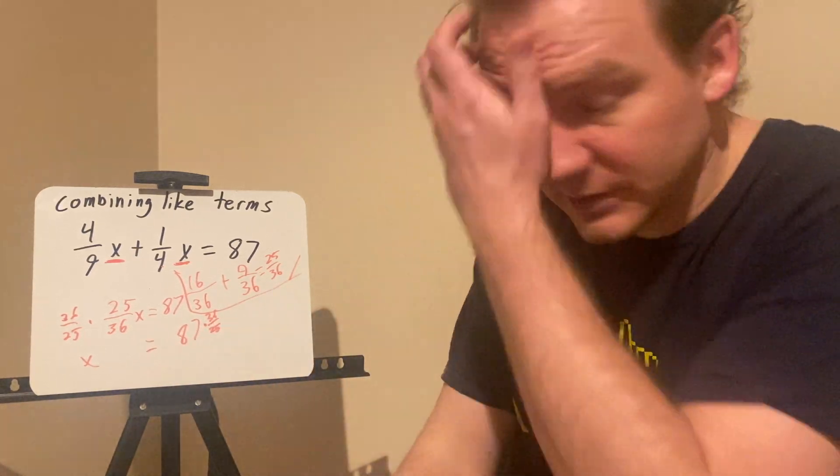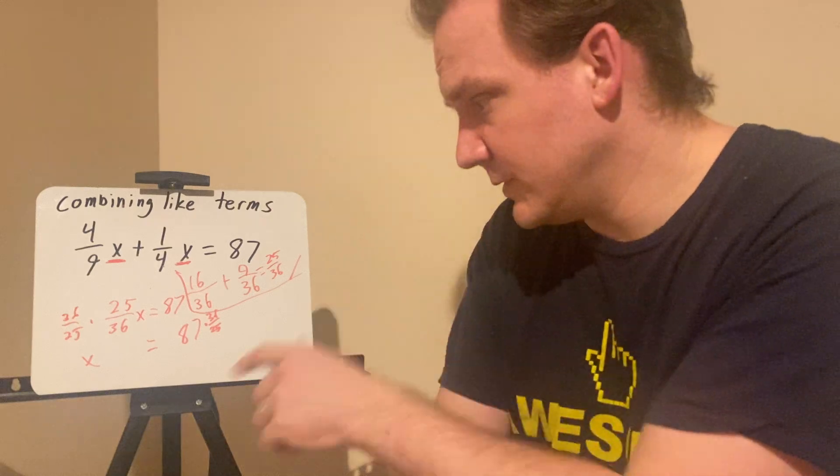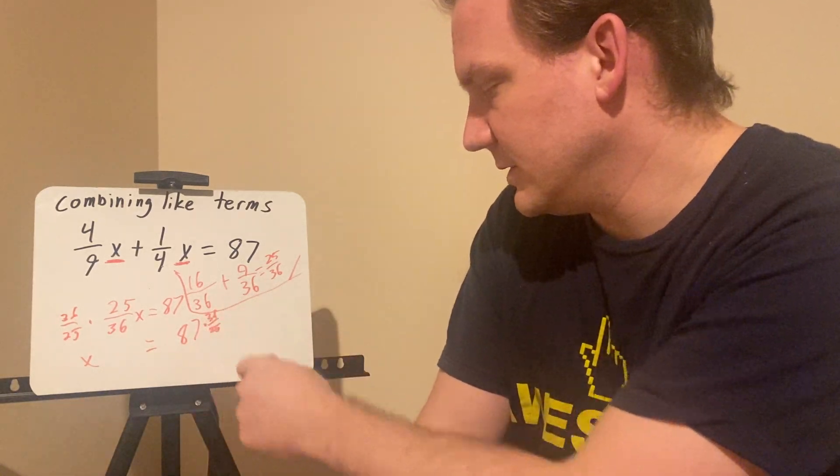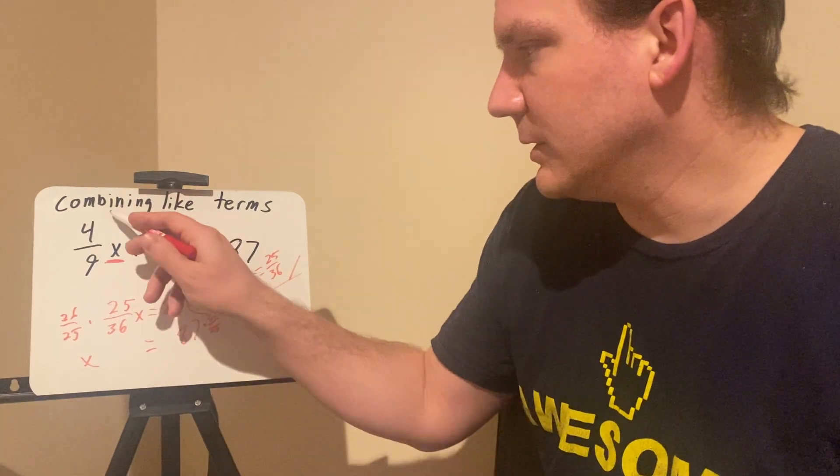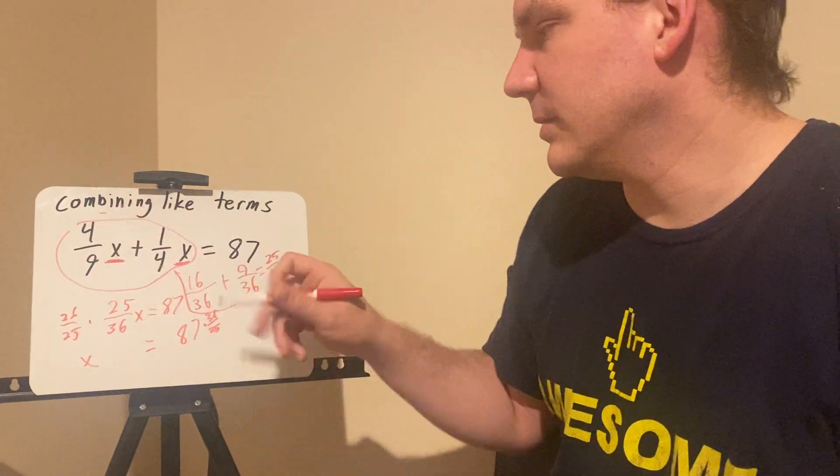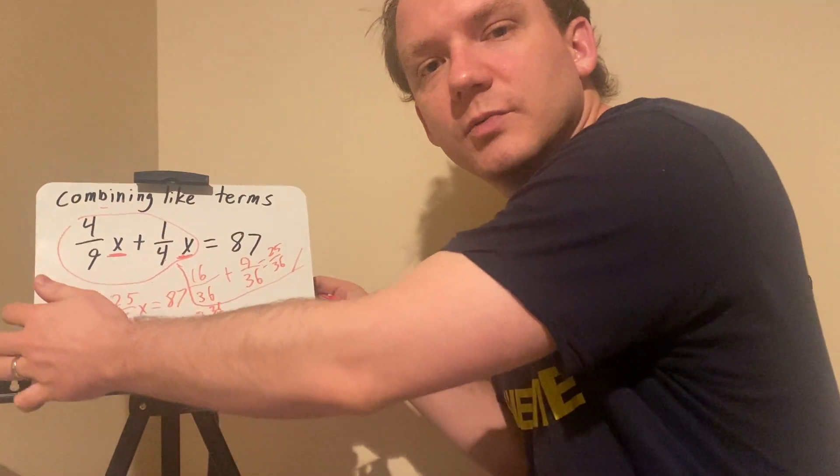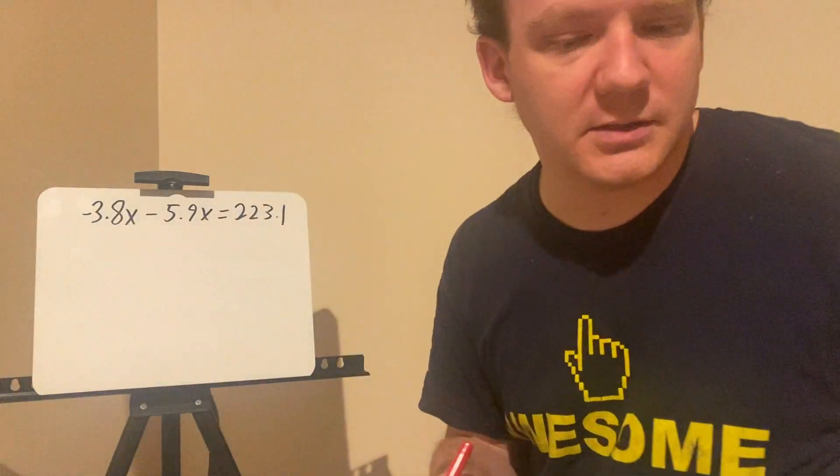And then 87 times 36 over 25. You could figure this out. You'd use a calculator, so you would do 87 times 36 and then divide that by 25. That's what x equals. But that's how you combine these like terms. I'm giving you hard ones in these examples. When we get to the actual work, it's going to be a little bit simpler.